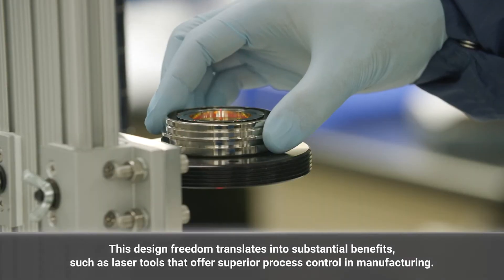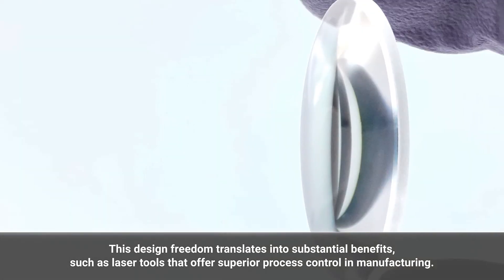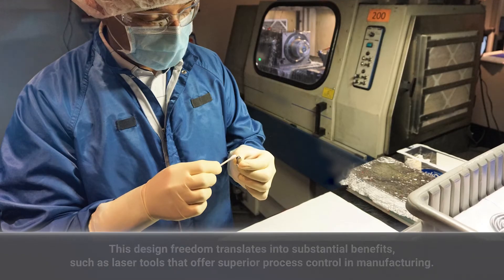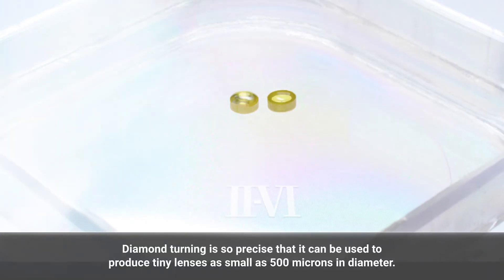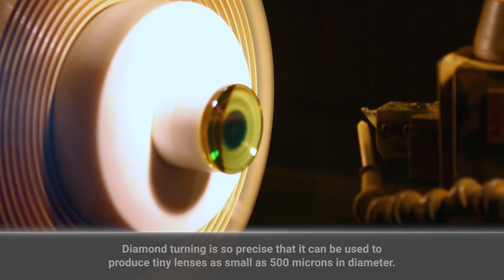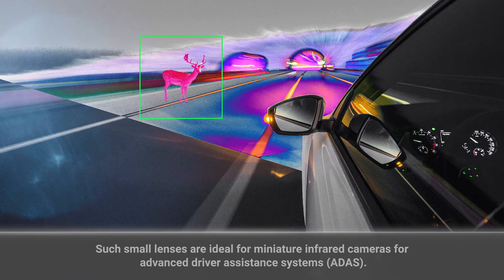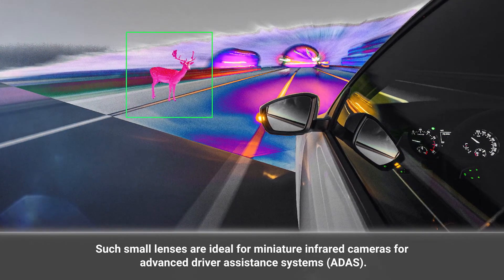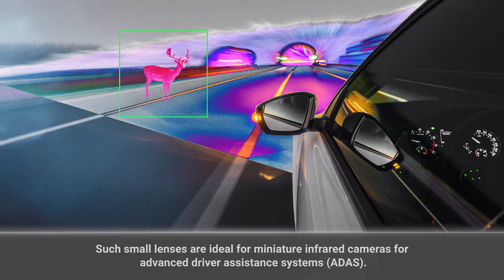This design freedom translates into substantial benefits, such as laser tools that offer superior process control and manufacturing. Diamond turning is so precise that it can produce tiny lenses as small as 500 microns in diameter. Such small lenses are ideal for miniature infrared cameras for advanced driver assistance systems, ADAS.